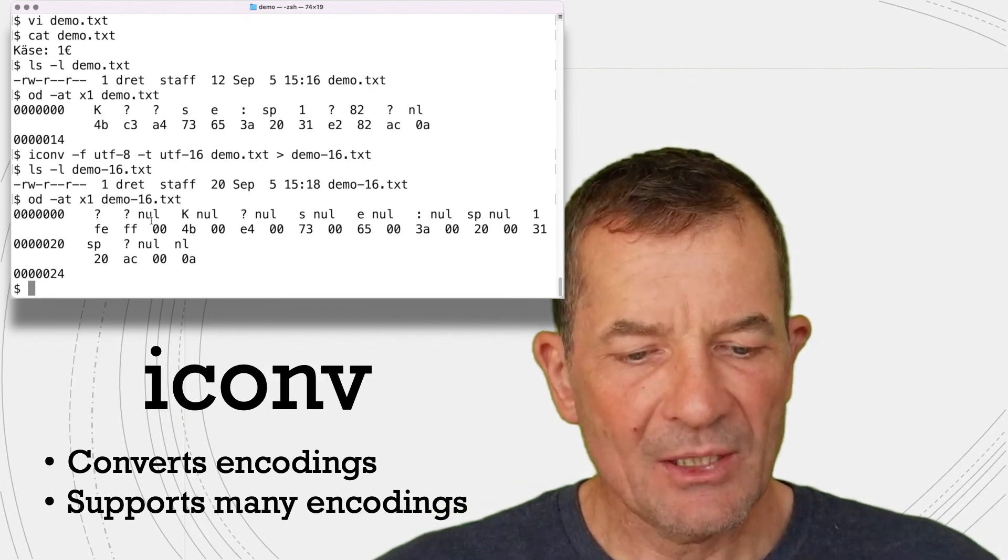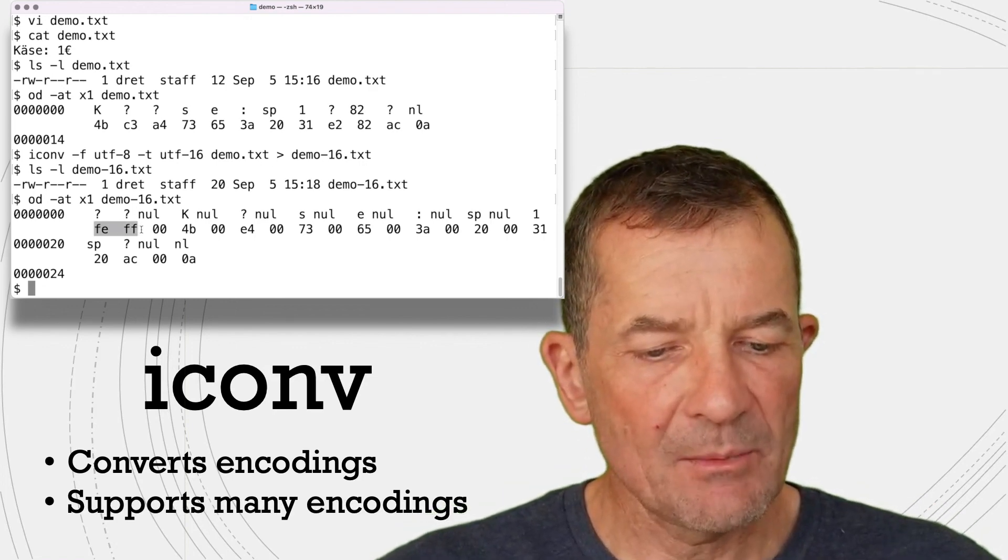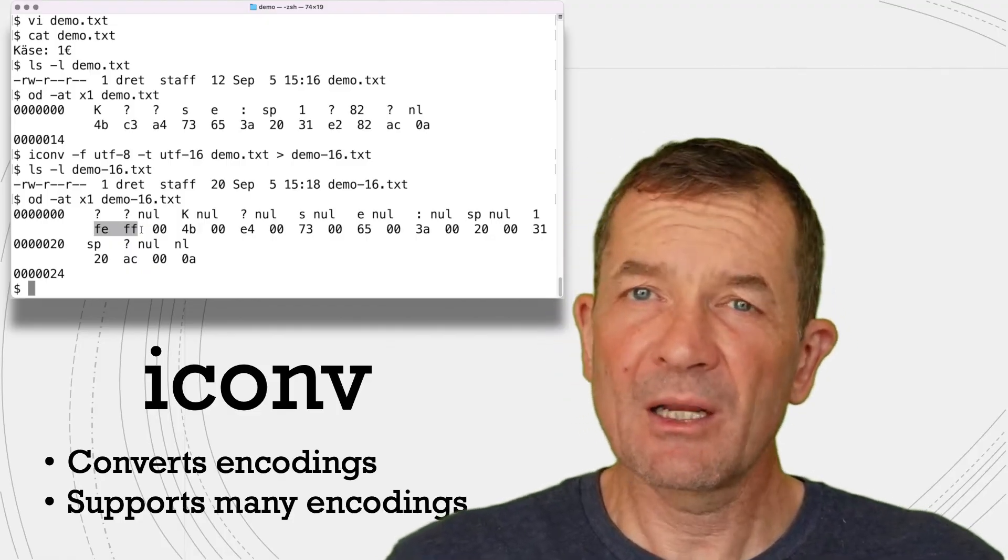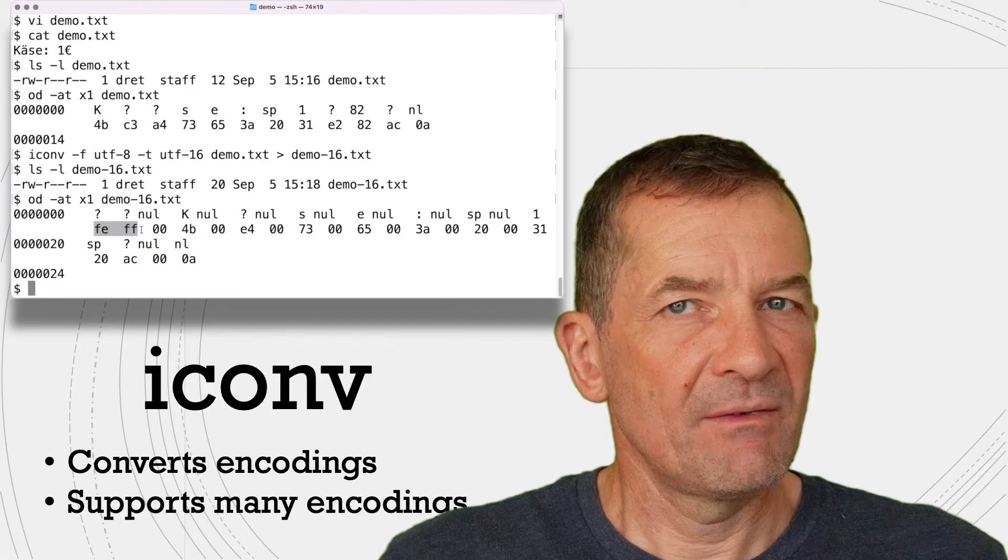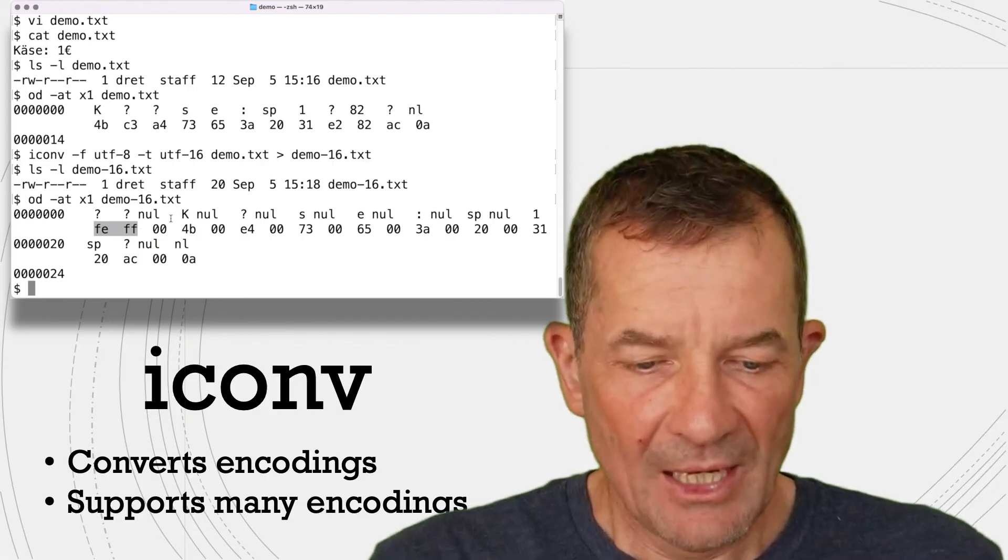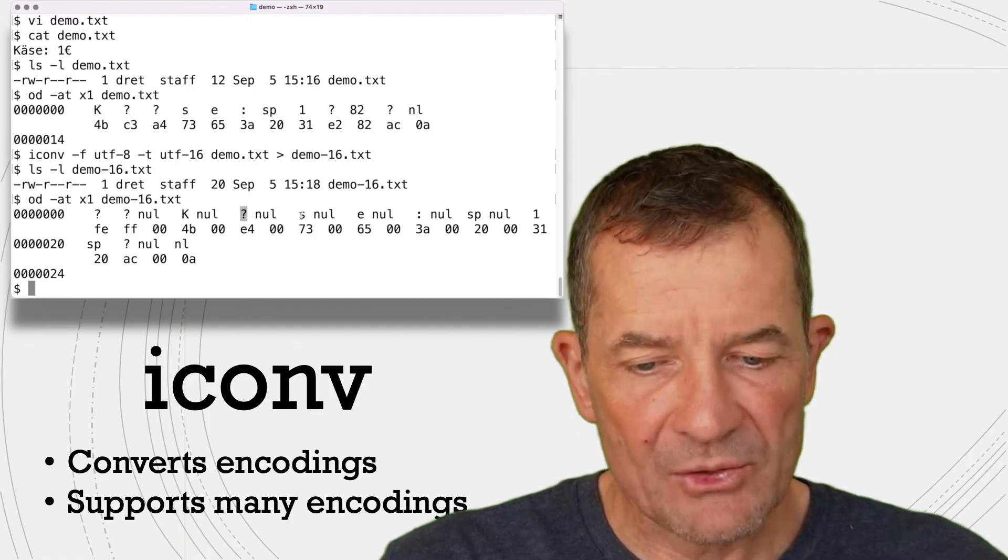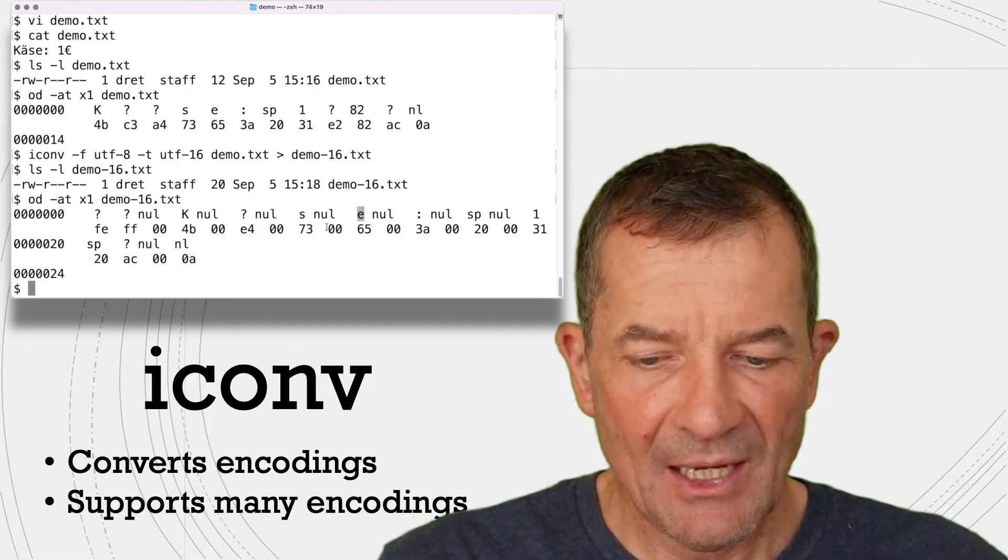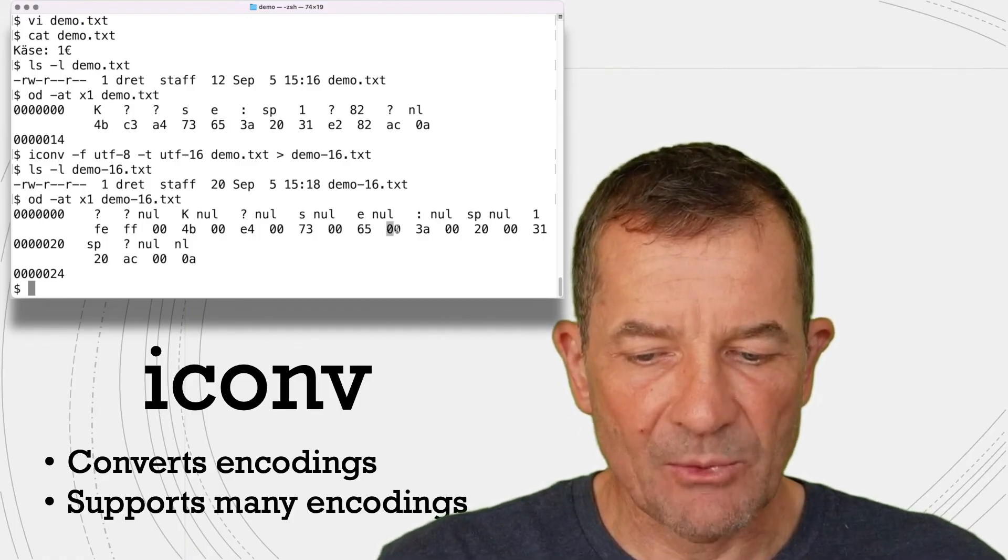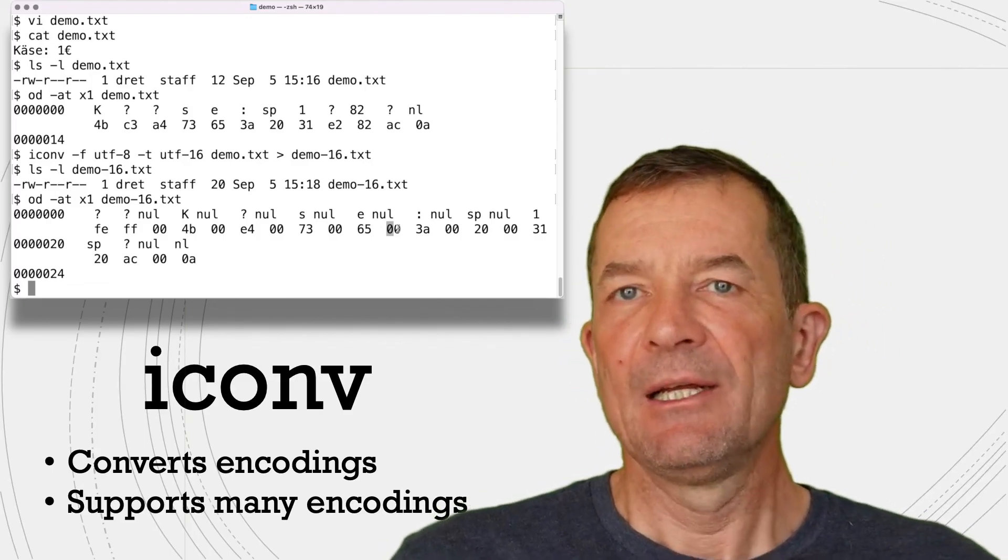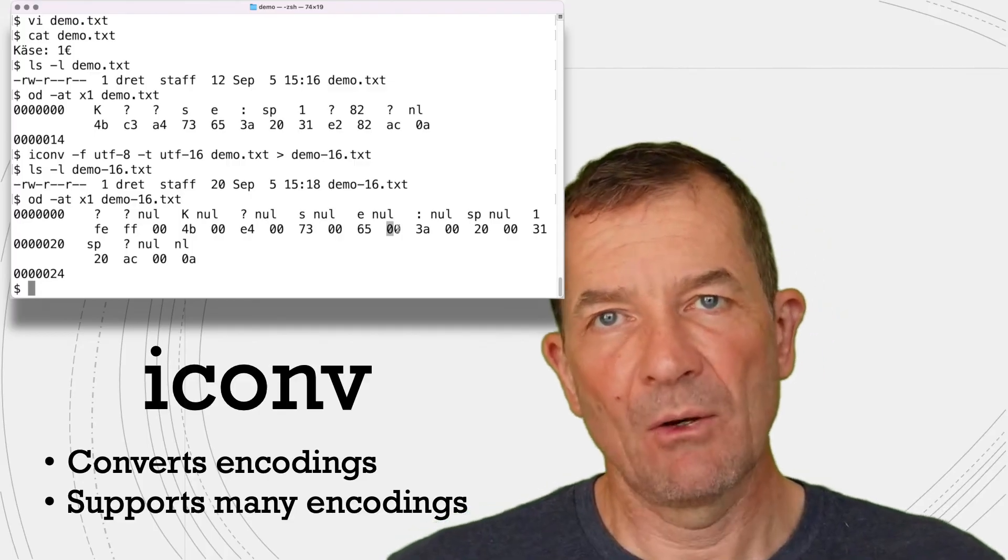And when we look at it now, what you can see is that this here is a little bit curious. We won't go into the details of this. This is called a byte order mark. This is what UTF-16 files should start with. But then we have the k here. We have the ä umlaut, so to speak. We have the s, we have the e. And you see all these zeros in between here.